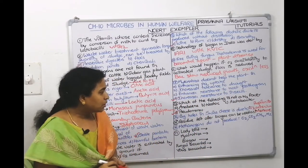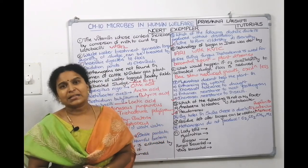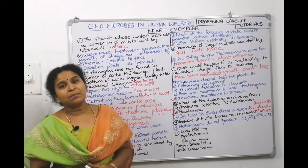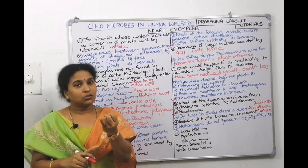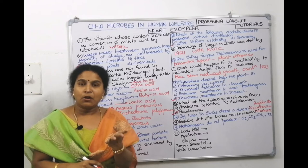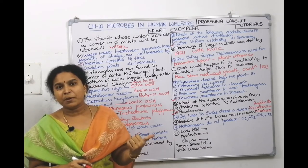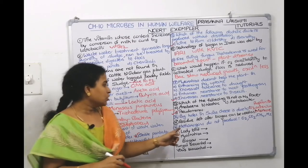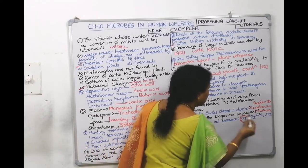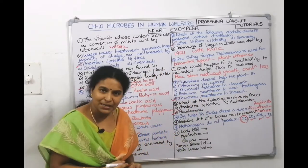Sixteenth question: methanogens do not produce — Methanogenic bacteria produce methane as the major gas; carbon dioxide, H₂, and H₂S will also be present. However, oxygen should NOT be there because methanogenesis is an anaerobic process — oxygen interferes and stops it. So methanogens do not produce oxygen. They produce methane, CO₂, H₂, and H₂S.